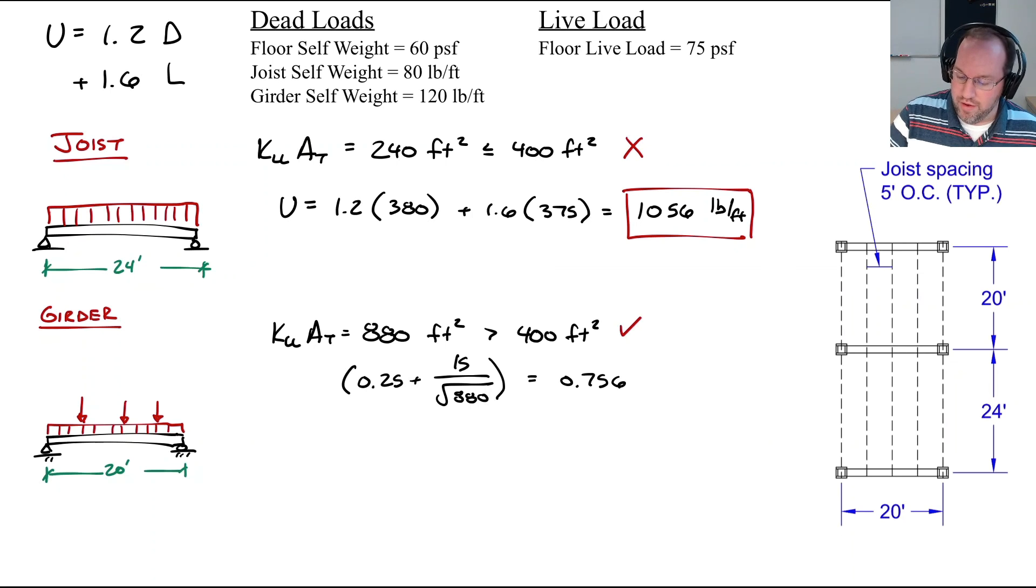Let's first calculate our distributed load. In this case there was only dead load, so it was 1.2 times 120 pounds per linear foot plus no live load, which is 144 pounds per foot.